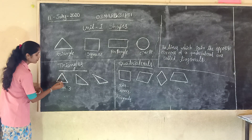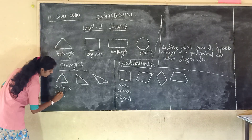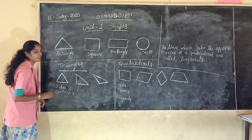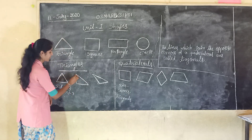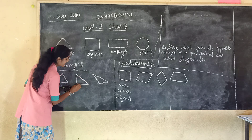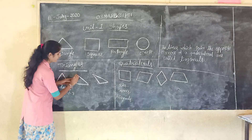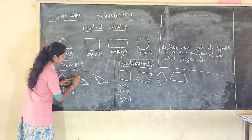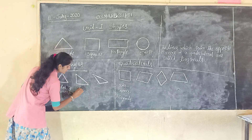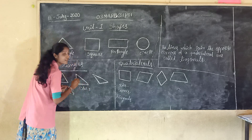One, two, three. Corners: three. See, here also, in this triangle, how many sides are there? Three sides — one, two, three. So here also, sides: three.